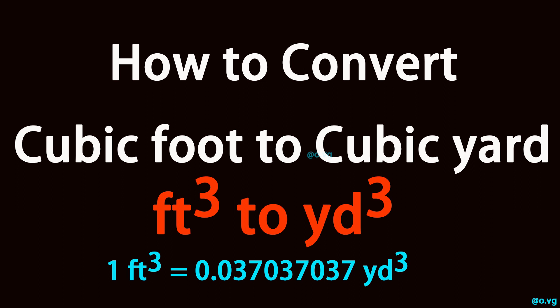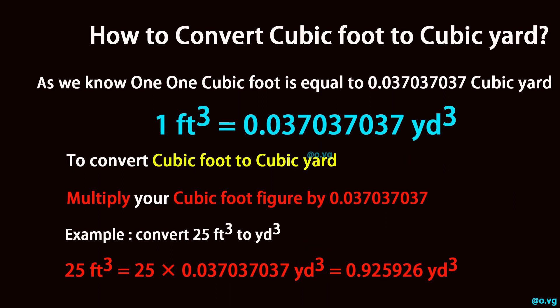How to Convert Cubic Foot to Cubic Yard. As we know, one cubic foot is equal to 0.037037037 cubic yards (1 ft³ = 0.037037037 yd³). To convert cubic foot to cubic yard, multiply your cubic foot figure by 0.037037037.